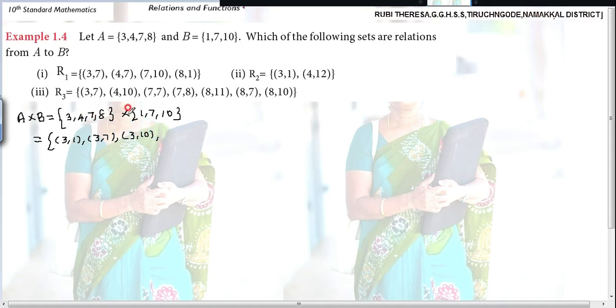Similarly, 4 is paired with these 3 elements. 4,1, 4,7, 4,10. Then 7,1, 7,7, 7,10. Finally, 8 is paired with these 3. Then 8,1, 8,7, 8,10. Is it ok?